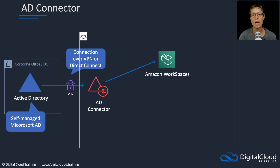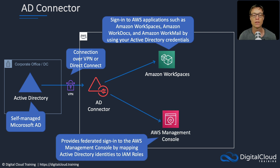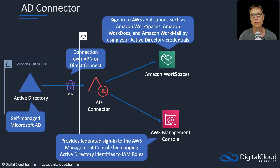For example, you can access Amazon Workspaces, WorkDocs, WorkMail, and the AWS management console through AD Connector. This is a federated sign-in where you map your Active Directory identities to IAM roles. Your Active Directory users from your corporate identity store are then able to access services using that role and whatever permissions that role has assigned to it.